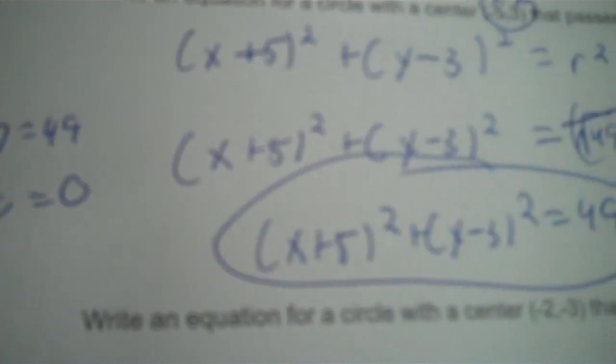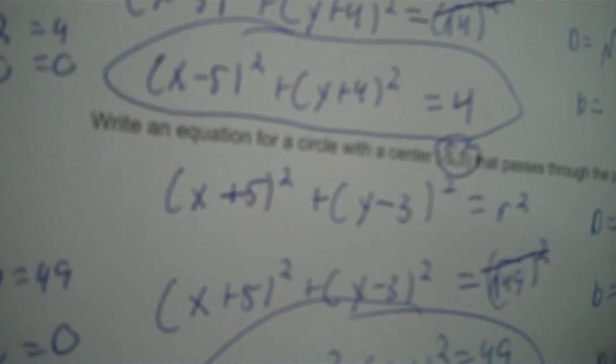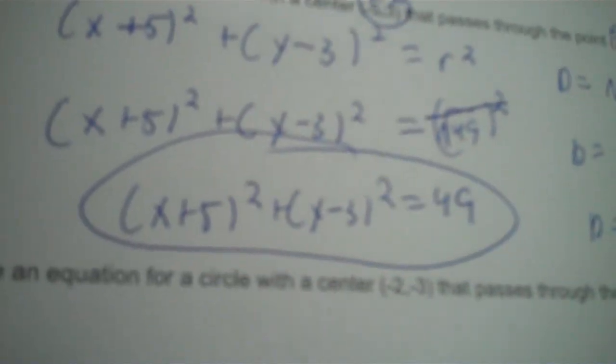And there's the circle's equation. You can always check your answer by substituting 2 in for x and 3 in for y — you should get 49. So 2 plus 5 squared plus 3 minus 3 squared — when I click equals, I should be at 49, and I am. You'd test it with the point on the circle, not the center.